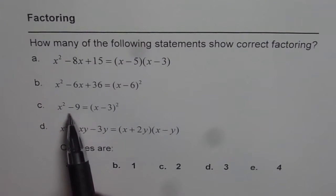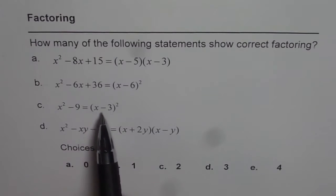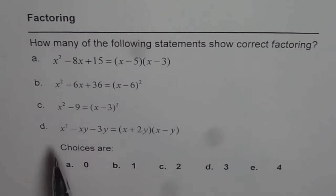Part c is x² - 9 = (x-3)². And d is x² - xy - 3y = (x+2y)(x-y).